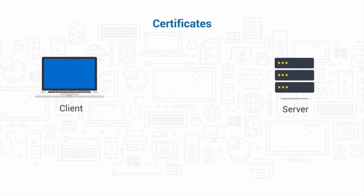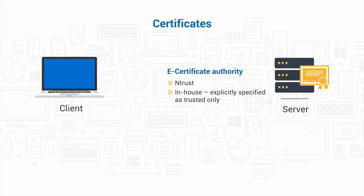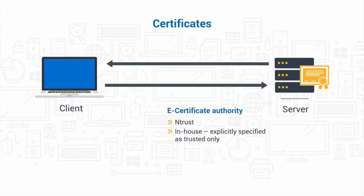An SSL or TLS session typically has a server system and a client system. To use SSL or TLS, you encrypt the communications in that session. The server must have a certificate issued by a certificate authority — it could be issued by trusted certificate authorities such as Entrust, or it could be minted by your own in-house certificate authority. Either way, you're encrypting the communications between the client and the server. The use of a certificate issued by a certificate authority indicates asymmetric encryption and the use of public keys between the client and the server.